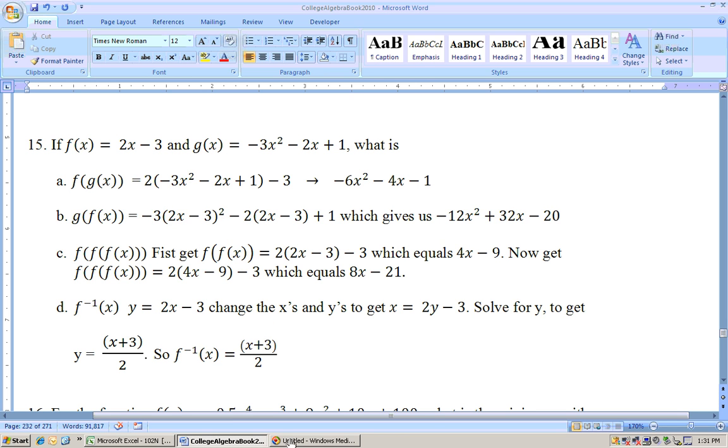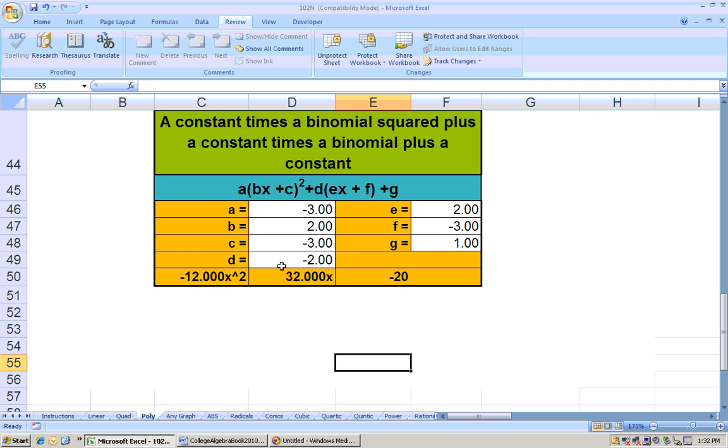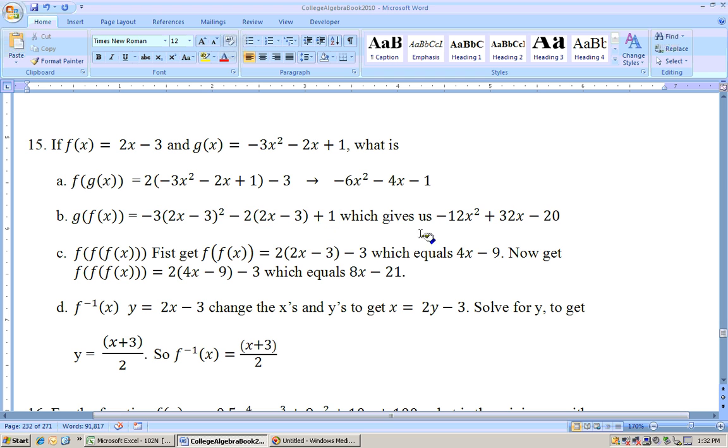But simplify this, and probably the best place to simplify this is the poly sheet. So I put in my coefficients, this is the bottom of the poly sheet, and I would get -12x² + 32x - 20. And that's what we have right there.